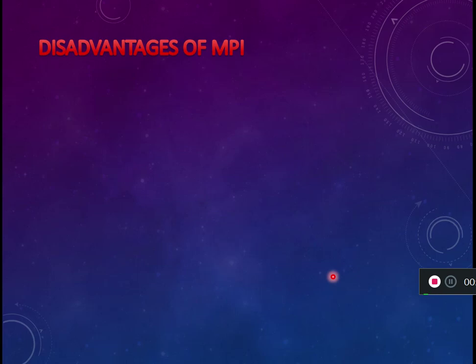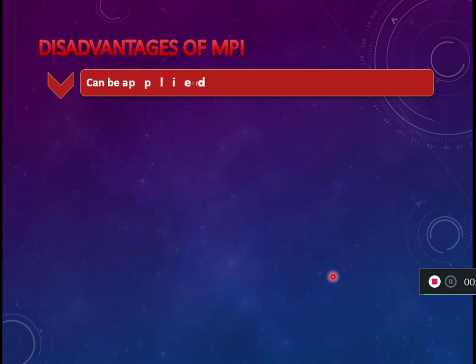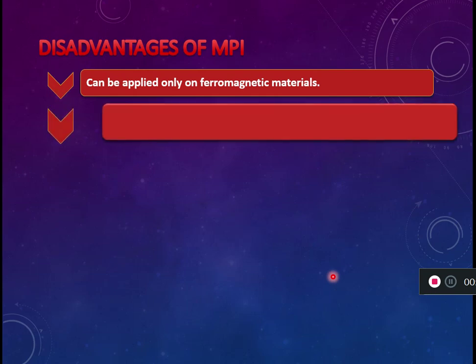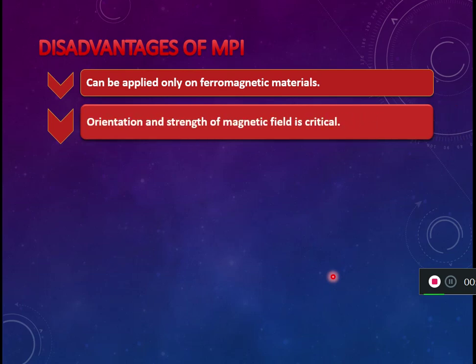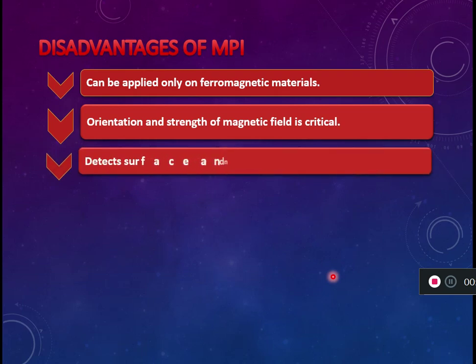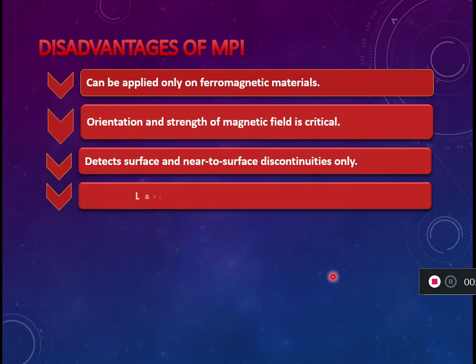Now for the disadvantages of MPI. It can be applied only to ferromagnetic materials — non-ferromagnetic materials cannot be tested. The orientation and strength of the magnetic field is critical. It detects surface and near-surface discontinuities only; internal discontinuities below the subsurface cannot be detected.